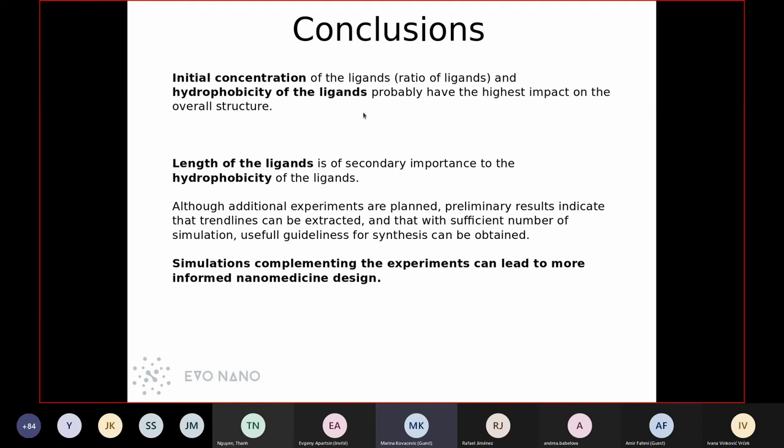So we can conclude that initial concentration of the ligands or the ratio of the ligands and their hydrophobicity probably have the highest impact on the overall structure. So the tendency of the hydrophobic ligands to decrease their surface accessible to the solvent results in bending of the whole ligand, which changes surface morphology. It also decreases overall nanoparticle size and coating thickness.